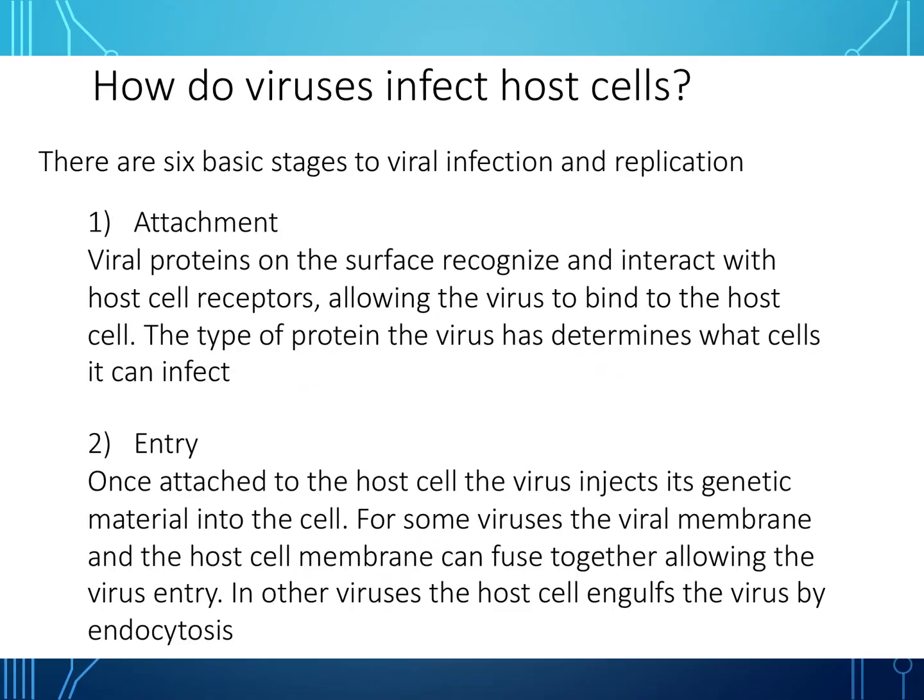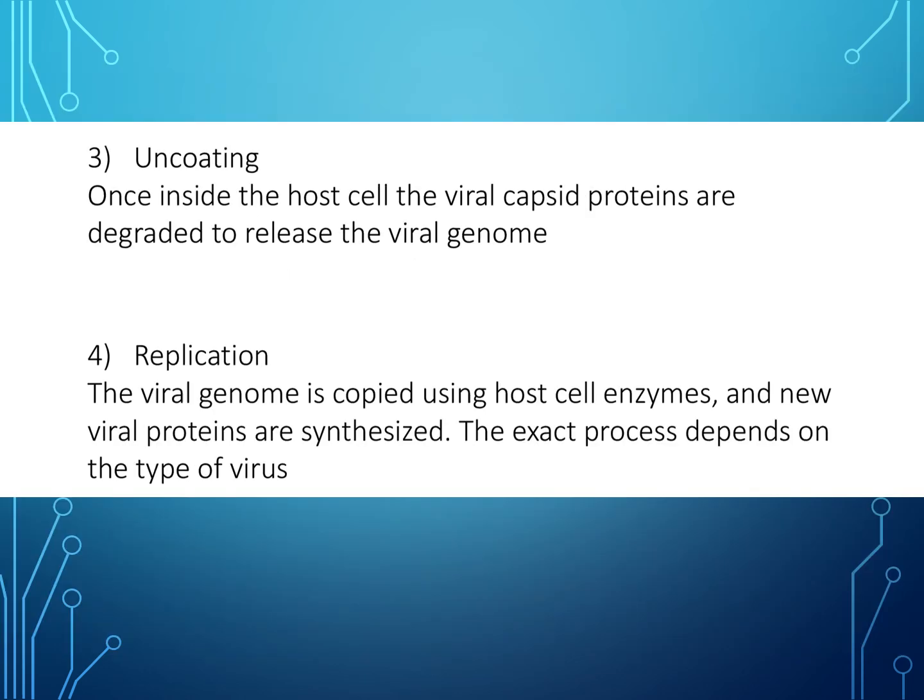There are six stages to infection of host cells. The first stage is attachment: viral proteins on the surface recognise and interact with host cell receptors, permitting the virus to bind to the host cell. The type of protein the virus has determines what cells it can infect. The second step is entry: once attached, the virus injects its genetic material into the cell. For some viruses the viral membrane and host cell membrane fuse together allowing virus entry; in other viruses the host cell engulfs the virus by endocytosis. The next step is uncoating: once inside the host cell, the viral capsid proteins are degraded to release the viral genome.